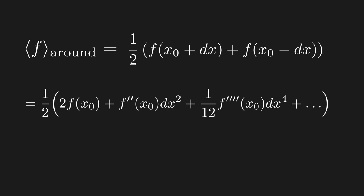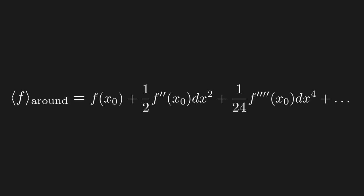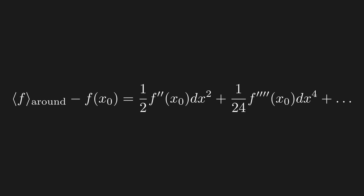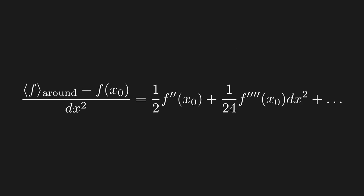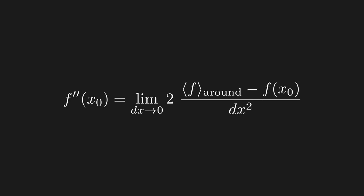Note that using a first-order expansion of both terms wouldn't have worked here — the first-order approximations cancelled out, and we'll have more to say on that in a moment. Dividing by two, we get the average of the points around x₀. We then subtract f(x₀) from both sides and divide both sides by dx². Taking the limit as dx goes to zero, all the terms with dx² and higher on the right-hand side go to zero. Moving the one-half to the left-hand side, we are left with the second derivative.